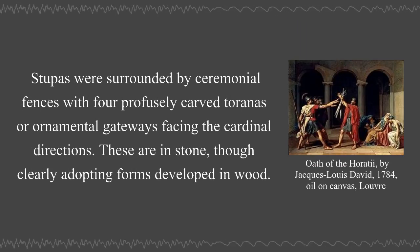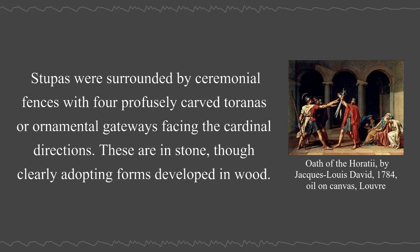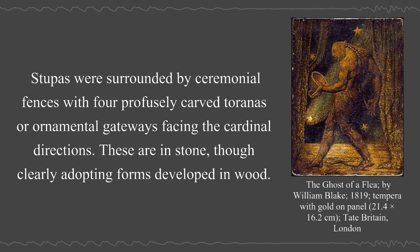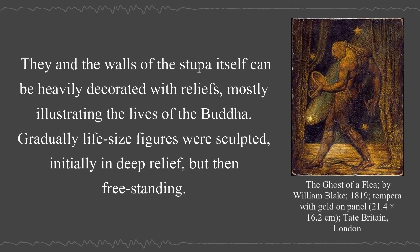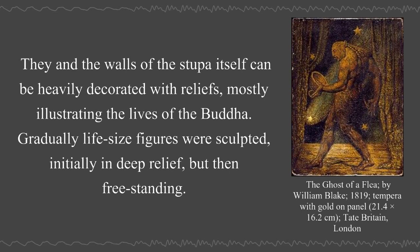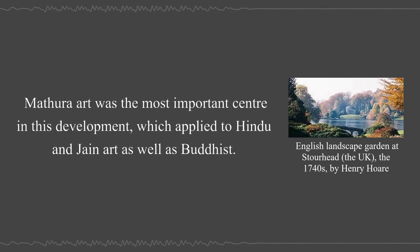Stupas were surrounded by ceremonial fences with four profusely carved toranas or ornamental gateways facing the cardinal directions. These are in stone, though clearly adopting forms developed in wood. They and the walls of the stupa itself can be heavily decorated with reliefs, mostly illustrating the lives of the Buddha. Gradually, life-size figures were sculpted, initially in deep relief but then freestanding. Mathura art was the most important center in this development, which applied to Hindu and Jain art as well as Buddhist.